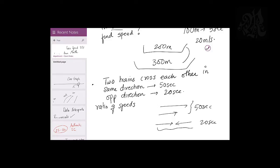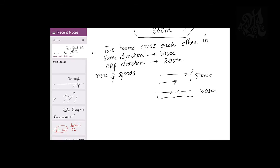They may tell you the faster train's speed and ask you to find the slower train's speed — for that you need the ratio. The trick: whenever two trains cross each other in the same and opposite directions and the timings are given, just add the timings and subtract the timings — that ratio will be the speed ratio. So 50 + 20 = 70 and 50 − 20 = 30, giving a ratio of 7:3.